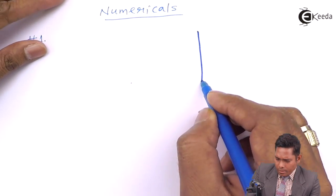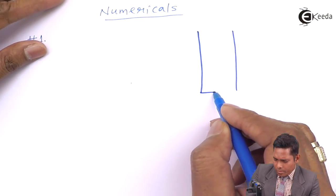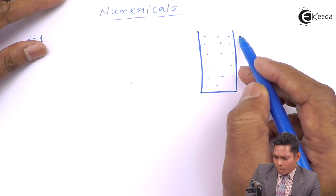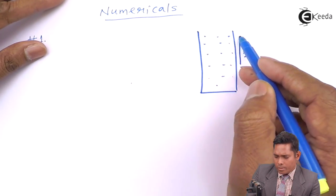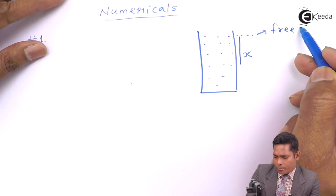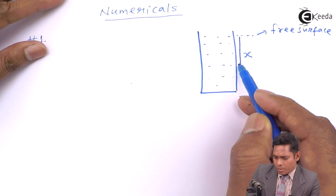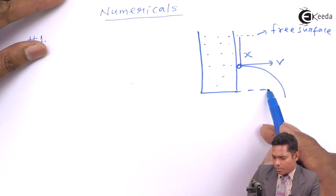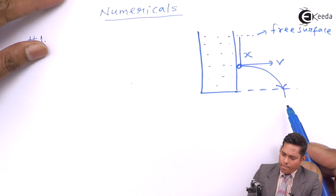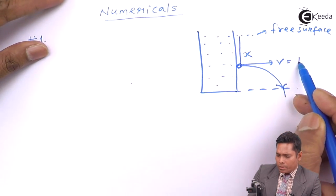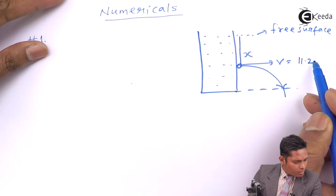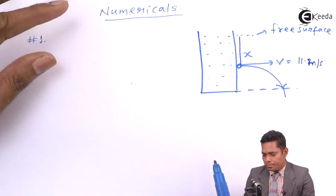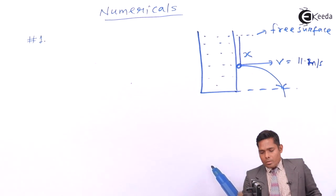The basic question is that this is a cylindrical vessel containing some liquid or water. A hole is made at a distance x below the free surface. This is the free surface. So here the hole is made. So what will come out like this? So you have to find the x when the velocity of the flow is given as 11 meter per second.